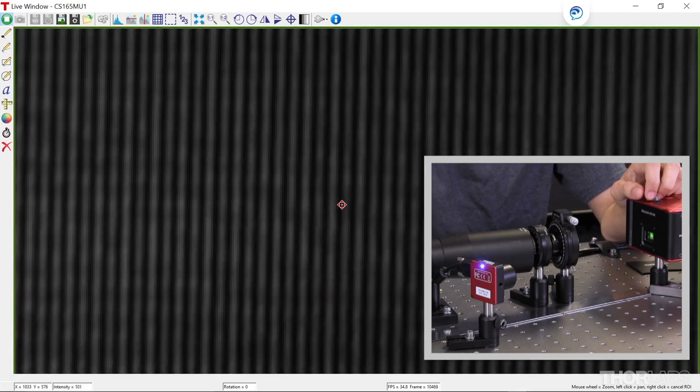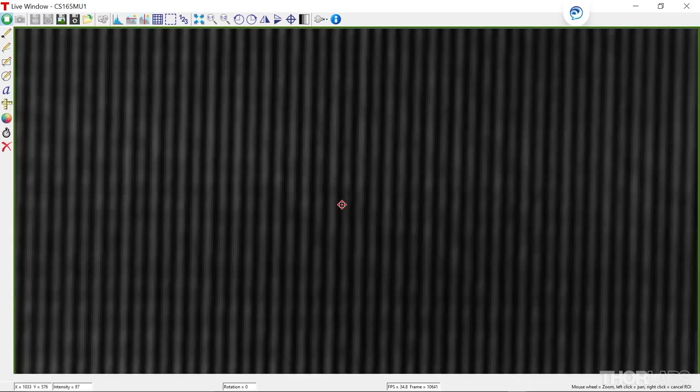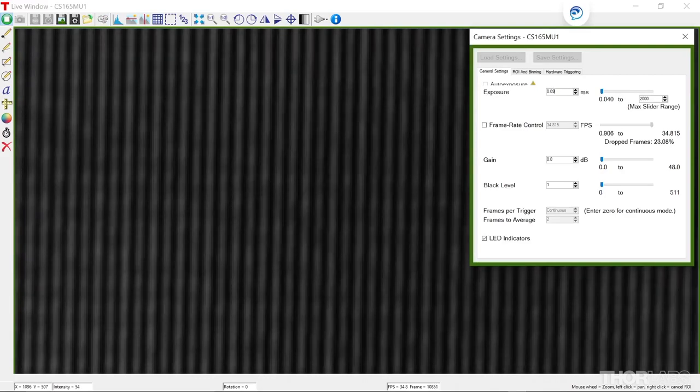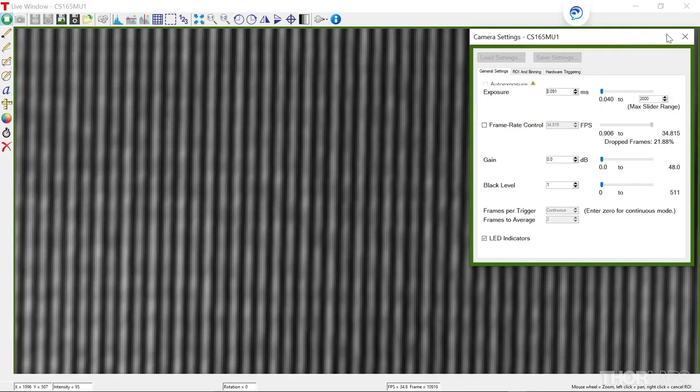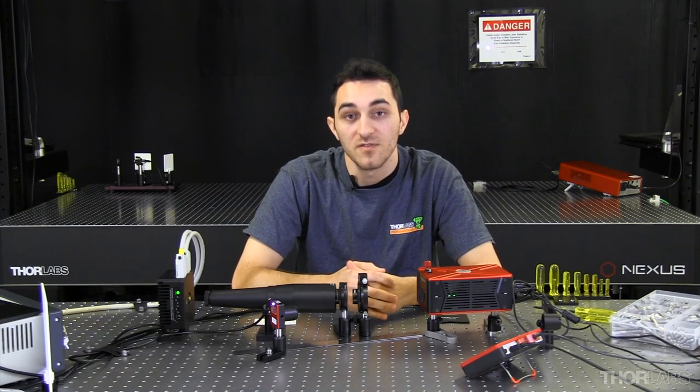However, before I take any measurements, I want to see if I can improve their quality by adjusting the exposure time of the camera. Now that everything is aligned properly, I can record the fringe patterns necessary to perform calibration.